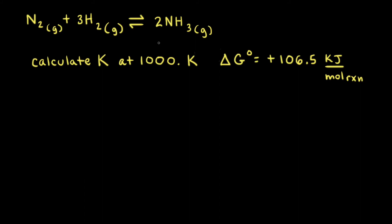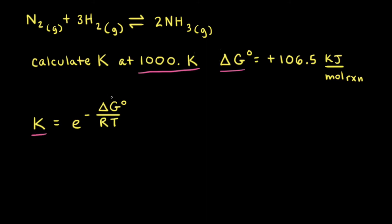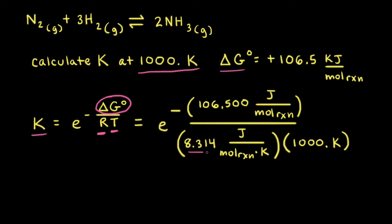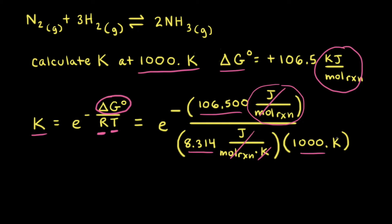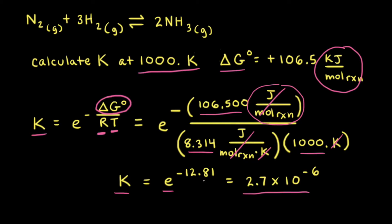For the same ammonia synthesis reaction, let's calculate K at 1000 Kelvin. At 1000 Kelvin, delta G naught equals positive 106.5 kilojoules per mole of reaction. We plug in delta G naught — converted to joules per mole of reaction — the temperature of 1000 Kelvin, and the ideal gas constant. Joules per mole of reaction cancels out, and Kelvin cancels out. That gives us K equals E to the negative 12.81 power, which equals 2.7 × 10⁻⁶. Because we have two decimal places in the power, the final answer is to two significant figures.